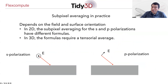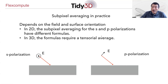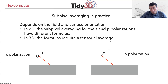In the two-dimensional case, subpixel averaging differs depending on whether you use s-polarization, where the electric field is parallel to the interface, or p-polarization, where the electric field has both a parallel and a perpendicular component — these two polarizations require different formulas. For three dimensions, where the interface and the field can have arbitrary orientation with respect to each other, it turns out you need to perform a tensorial average to do correct subpixel averaging. This is in fact the algorithm implemented in the Tidy3D code from FluxCompute.